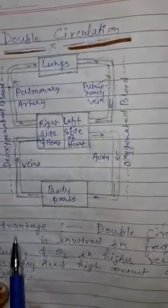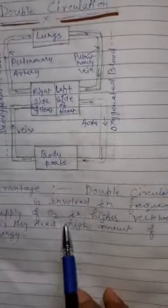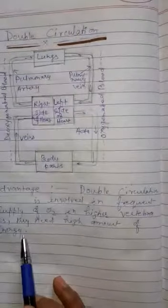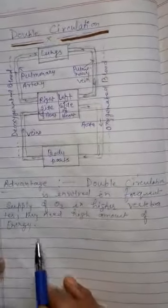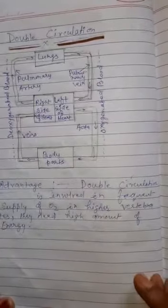There is an advantage of double circulation. Double circulation is involved in frequent supply of oxygen in higher vertebrates because they need high amount of energy and for the production of energy, there is need of extra amount of oxygen.